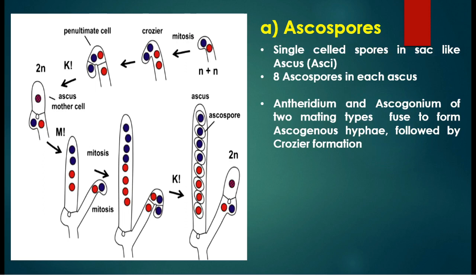During crozier formation the tip of the ascogenous hyphae curls over. One of the haploid nuclei migrates into the curved tip while the other compatible haploid nucleus remains in the penultimate space below the hook. Then each nucleus divides by mitosis, resulting in the formation of a pair of compatible nuclei — a dikaryon. One of the two sister nuclei remains in the basal cell and the other in the crozier.